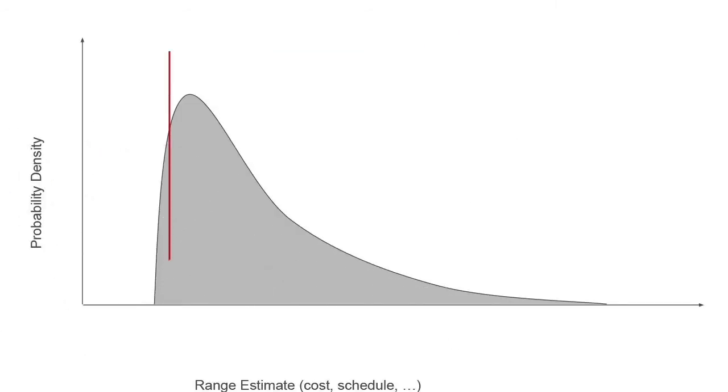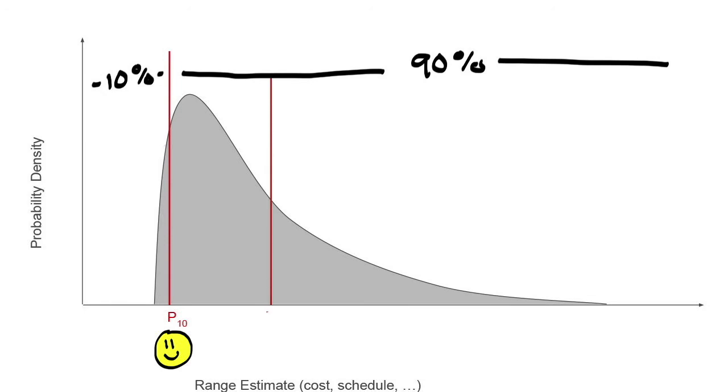The oil and gas industry typically defines the optimistic case as the P10, that is a 10% chance of lower, 90% chance of higher. The median case is the P50, 50% chance of lower, 50% chance of higher.